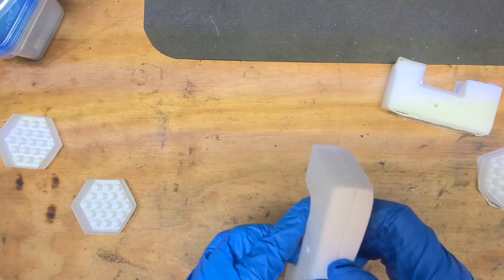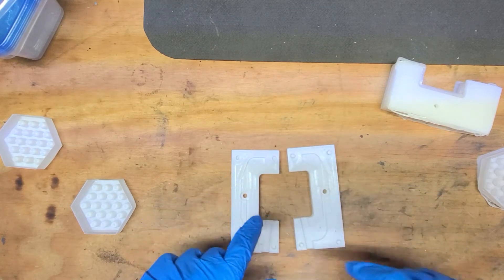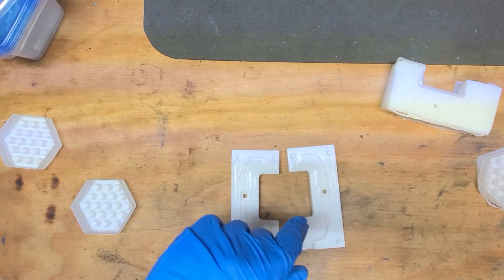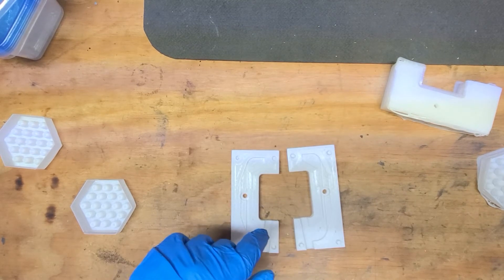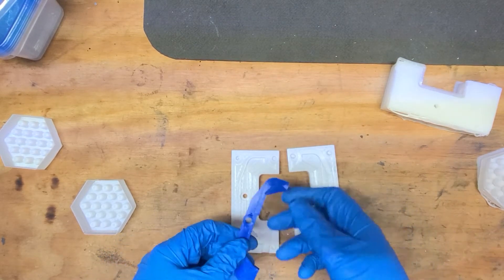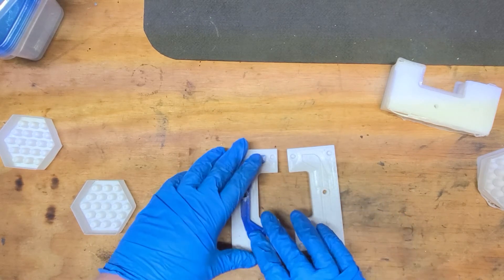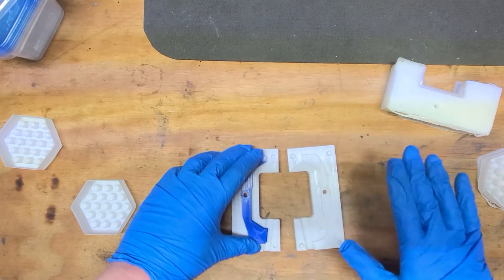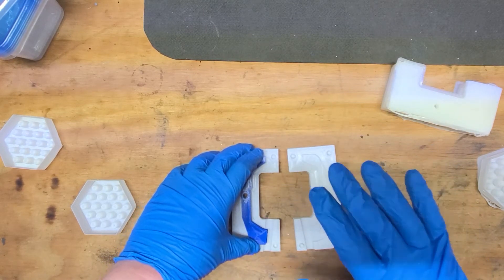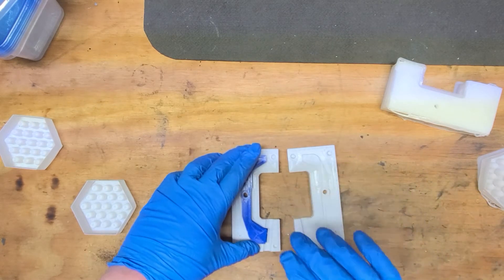So we have our cavity that will cast this in whatever kind of epoxies or whatever we decide to do. This is just a PLA mold, which means trying to get this off of this part is going to be quite difficult.